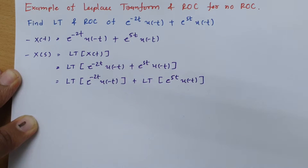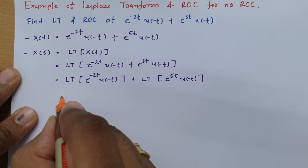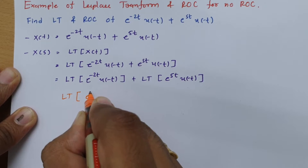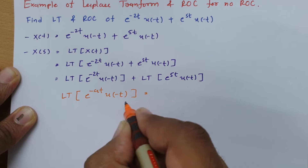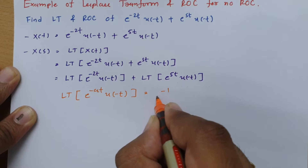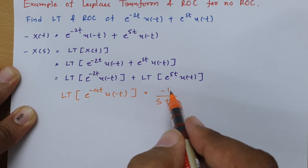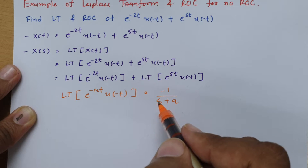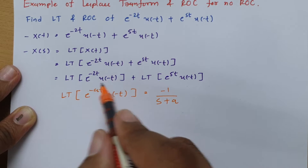As I have explained earlier, for an exponential signal with u(-t), the Laplace transform is -1/(s+a). We have derived this in previous examples, so I am directly using it here for simplicity.